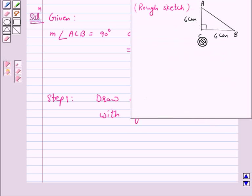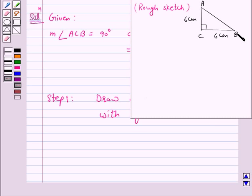This is a rough sketch with given measures where angle ACB is 90 degrees, AC is 6 cm, and CB is also equal to 6 cm.